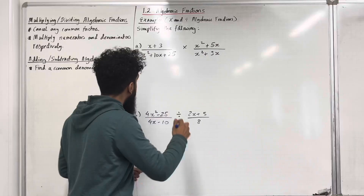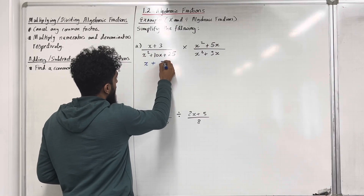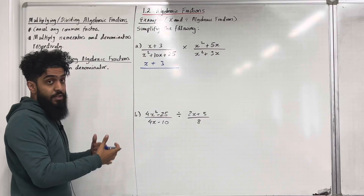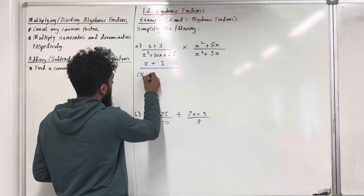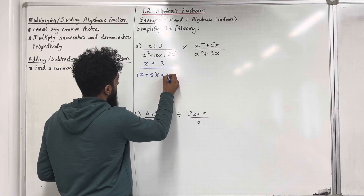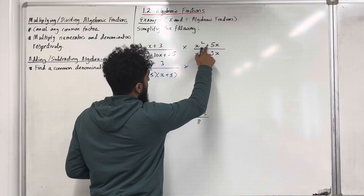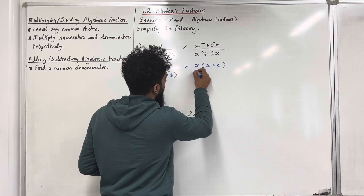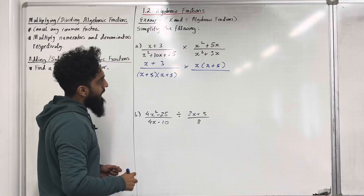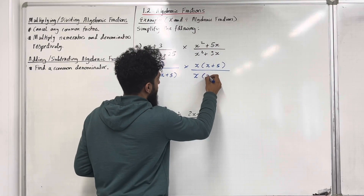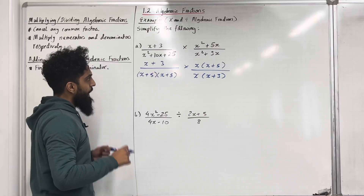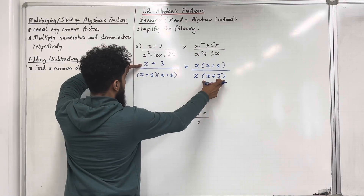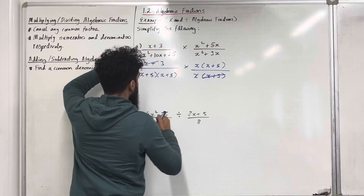If I write out the first fraction, I've got x plus 3 over a quadratic in the denominator which can be factorised into double brackets. The factorisation will be x plus 5, multiplied by x squared plus 5x, which can be factorised into x times x plus 3 in brackets. Now I've got common factors — I've got an x plus 3 here and an x plus 3 here.